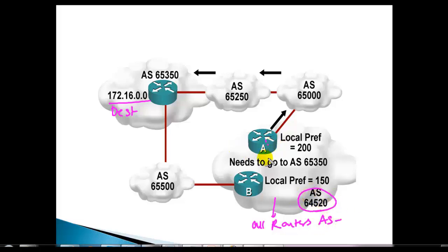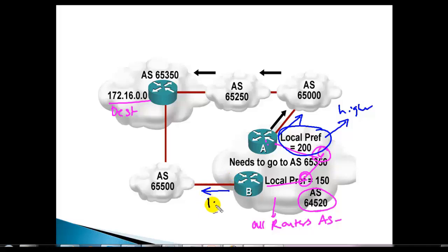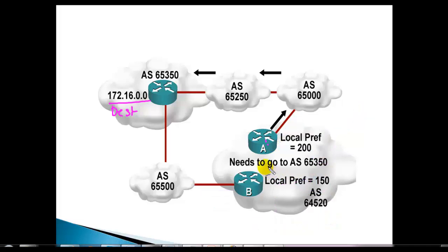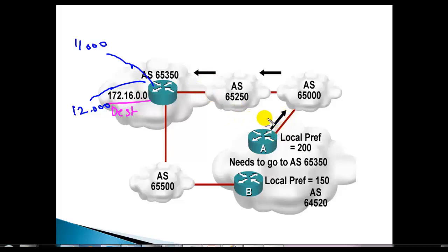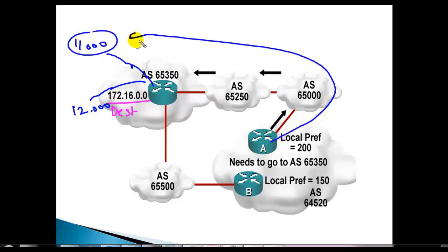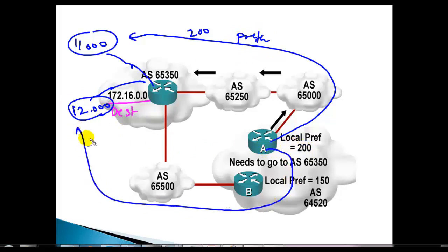If the AS is 64520 and you have many routers regardless of network size, you can apply a local preference value higher than the default of 100, such as 150. You can also use route maps — just like we did with weight — to match specific networks like 11.network and set local preference 200, or match 12.network and set local preference 200.